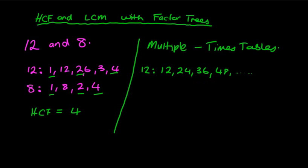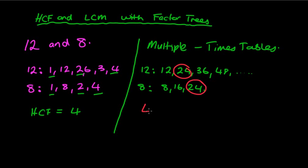I usually write out three or four multiples. Then if I look at the multiples of 8: 8, 16, 24. I'm going to stop there because we're looking for the lowest common multiple. The minute I find a multiple that's exactly the same — in this case 24 — that becomes the lowest common multiple. These are smaller numbers so it's not too difficult.